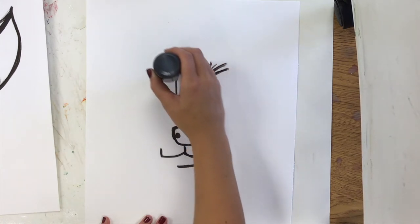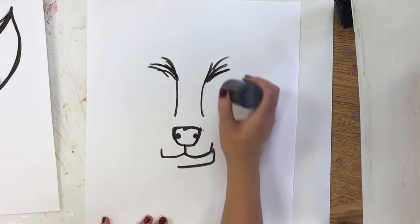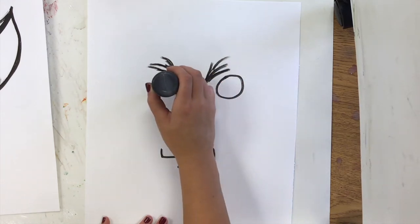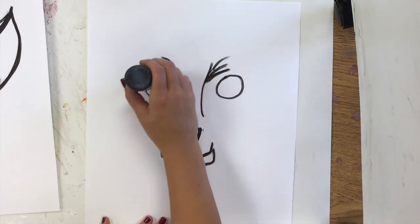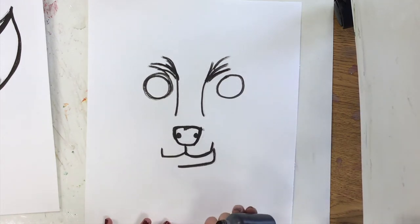And below that, we'll make two circles. Chihuahuas have big eyes with their little bodies. And then you can go ahead and draw some pupils inside of those. Again, still not pushing very hard.